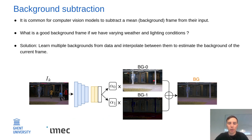That's what's shown here in the figure below. We learn, in this case, two background base frames purely from data. And then if we give a new frame to the model, we estimate the weights that we should use to interpolate between these two background bases to get a good estimate of the current background.